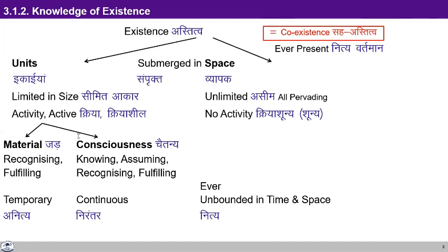It is also sustaining us. The problem is that human beings, without understanding this vast reality of coexistence, harmony, and relationship, are trying to run things in their own way without understanding it. That is the problem. Otherwise, the existence is sustaining itself anyway. This coexistence, this harmony, this relationship is sustaining itself and it is also sustaining the human being. We don't have to sustain it — it is sustaining us. We only have to understand it and be with it. Then it will be a sustainable model. The crisis is with the human being, not with the existence.